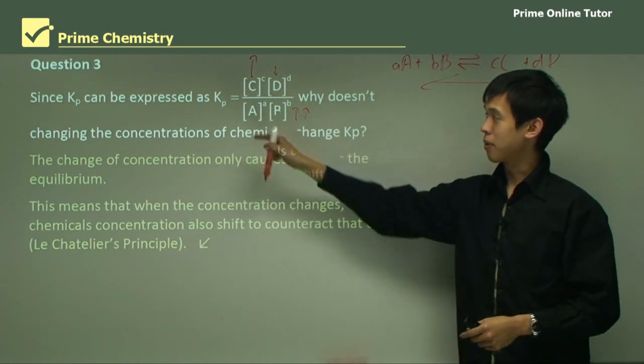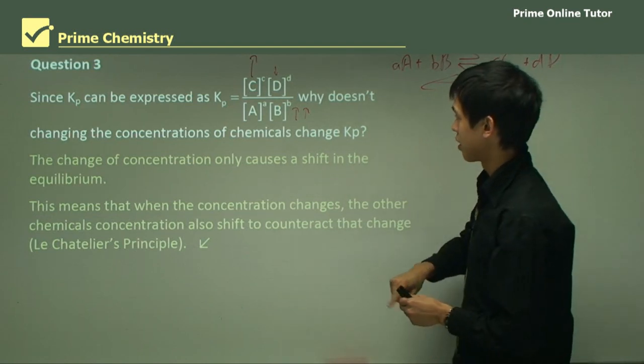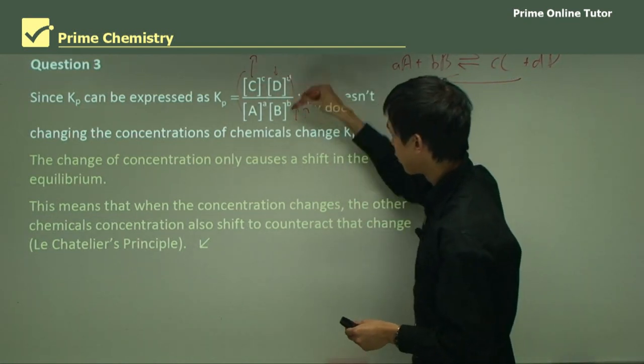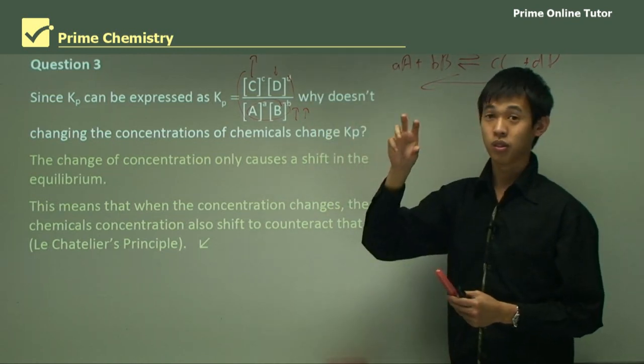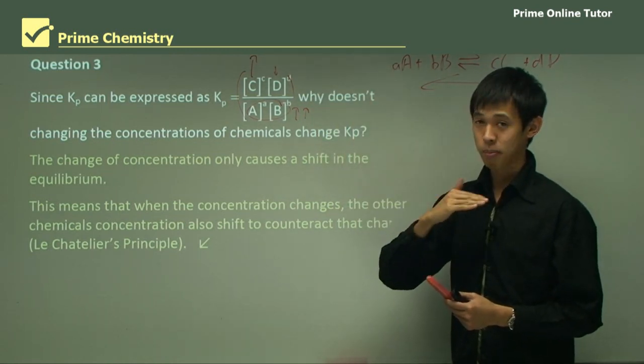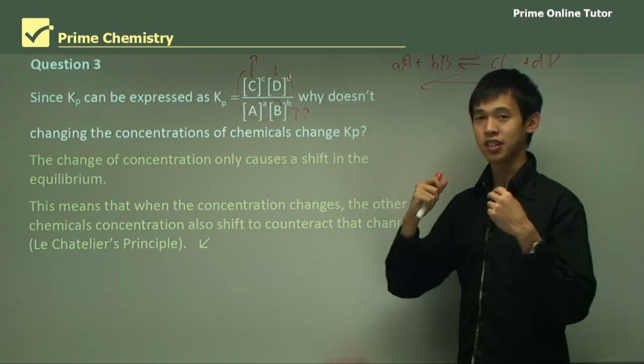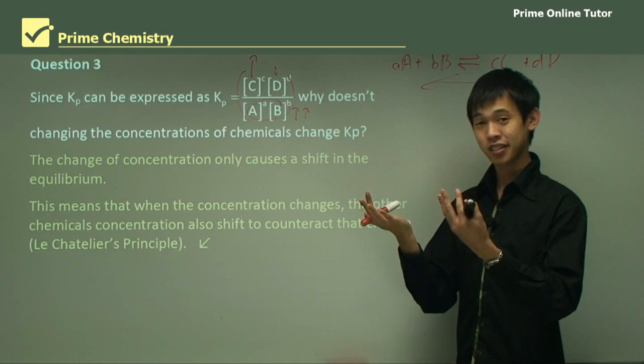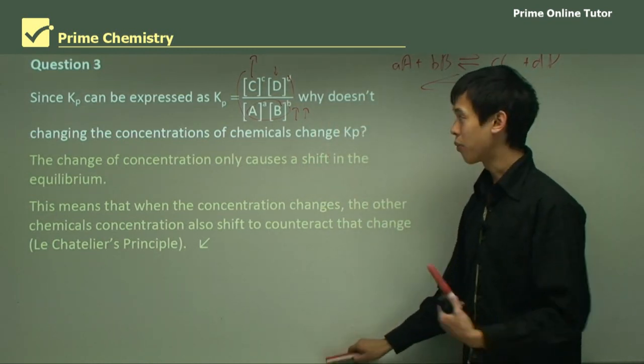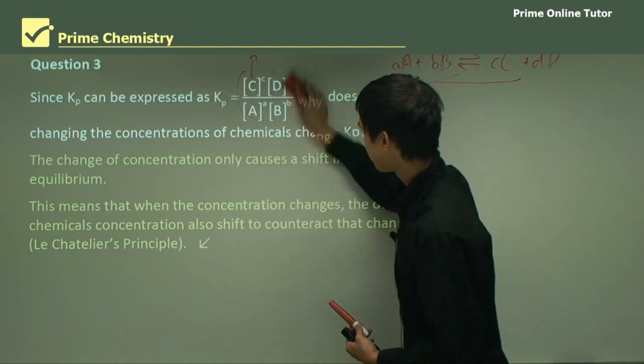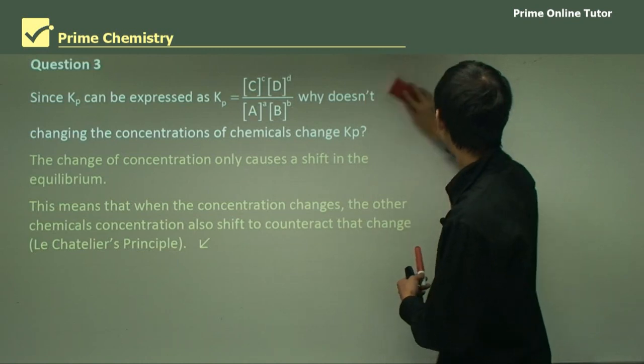But if you increase the bottom number, the whole number itself decreases also. So this whole number, if you increase the value of this, then Kp will have a reduction in number. But C went up. So can you see that all of these reductions sort of offset that increase in C? So that's one way of visualizing what's happening when we change the concentration of certain chemicals.